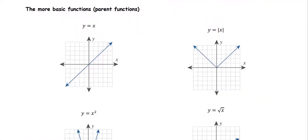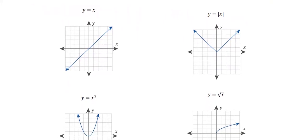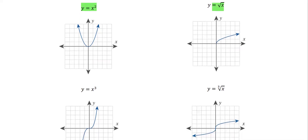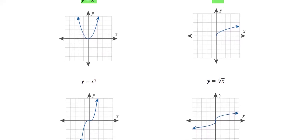The four basic functions we are going to base our work on are: y = x, which is a straight line with slope 1; y = |x|, the V-shaped graph; y = x², which is a parabola; and y = √x, the square root graph. The domain of y = √x is non-negative numbers for x, which is why the graph appears only on the right side of the xy-plane.